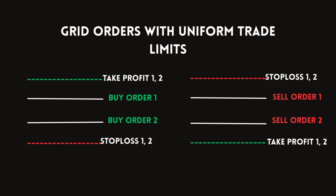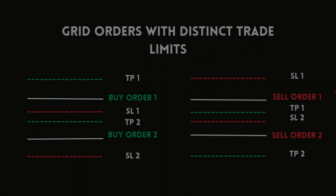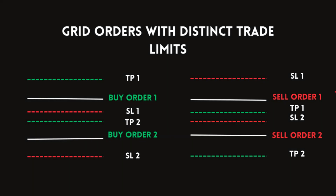With uniform trade limits, when the market price gets to that point every order closes instantly. If it hits your stop loss it closes at a loss, and if it hits your take profit it closes all orders at that same point. The next illustration shows three different orders with distinct take profit and stop loss — when the market price hits a particular take profit or loss it only takes out the first order, leaving the remaining ones. So those are the two types of grid order placement.